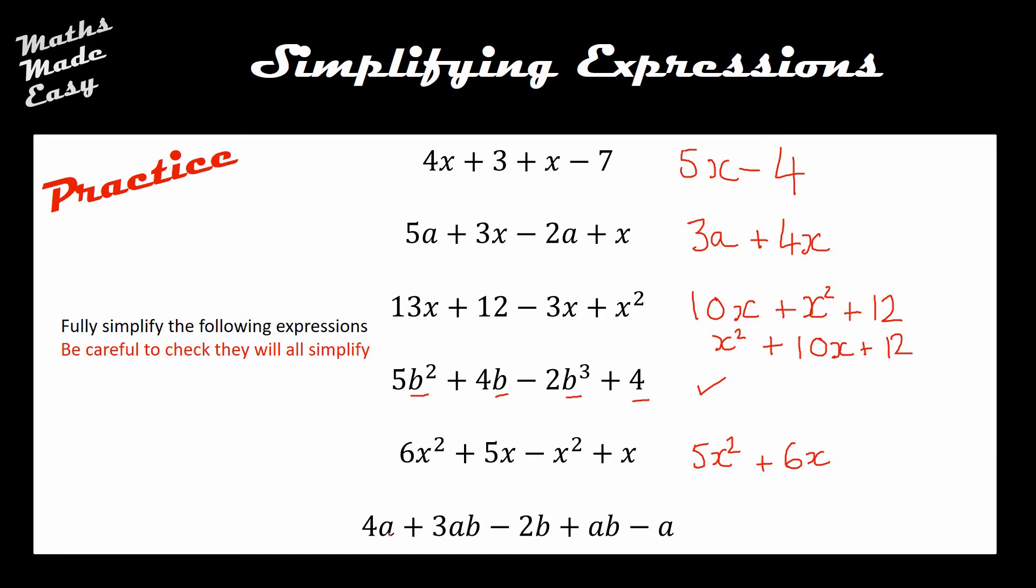And on to the final one, I can see that I've got a terms and an a term here at the end, so that will combine to give me a total of three a's. I can see that I've got plus 3ab plus ab, so in total I have plus 4ab's, and the minus 2b has nothing to combine with so that sits out on the end by itself.